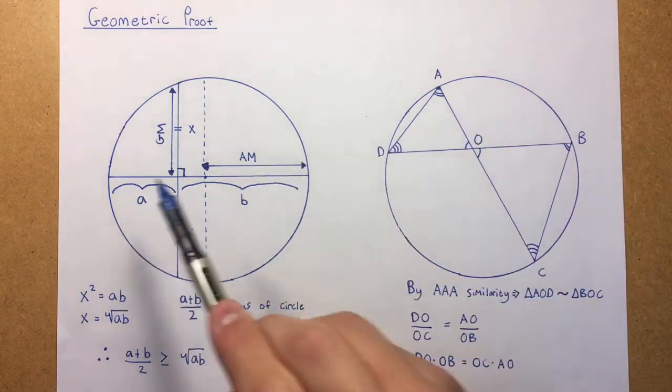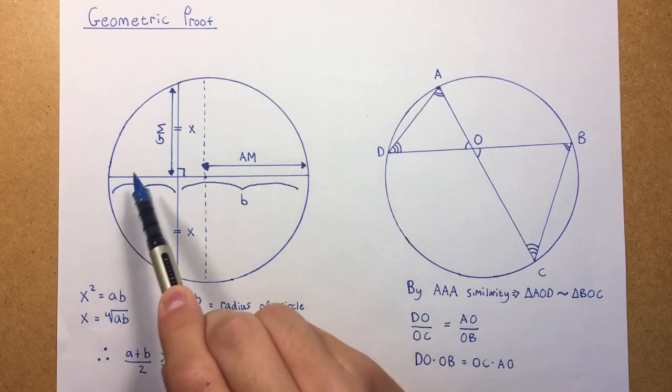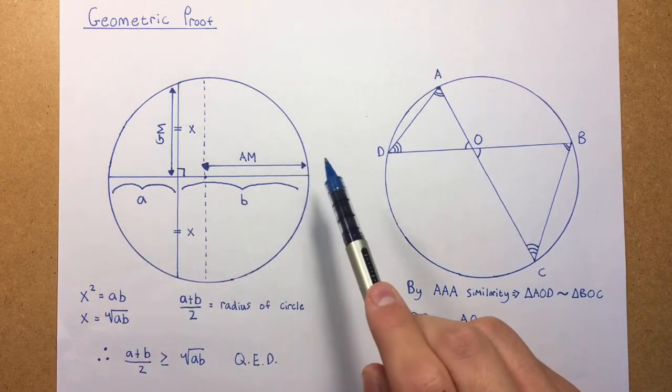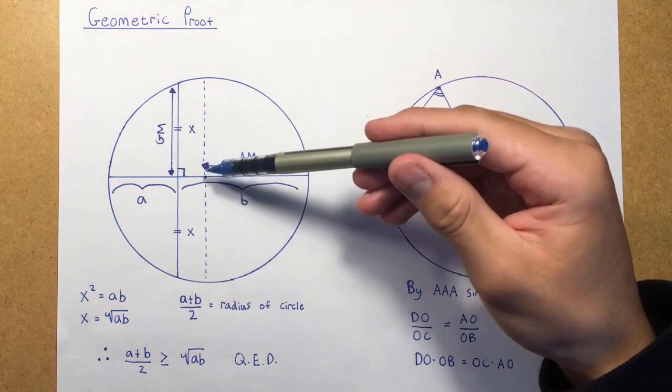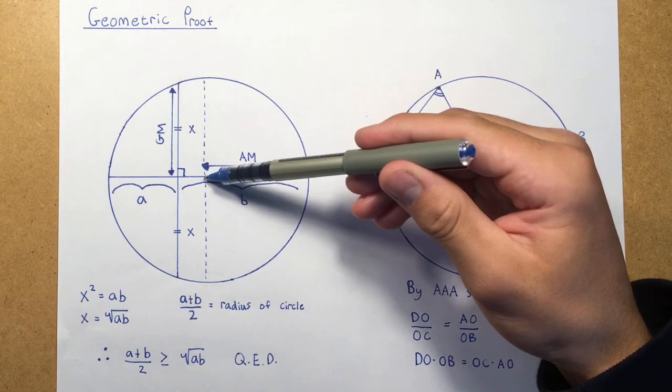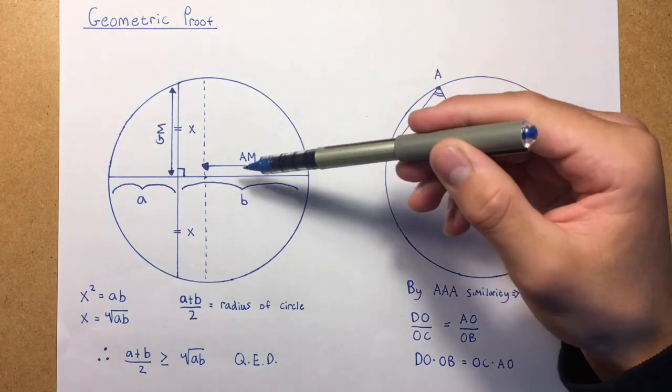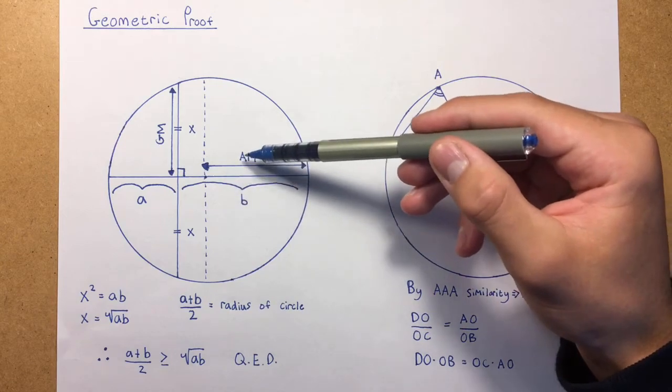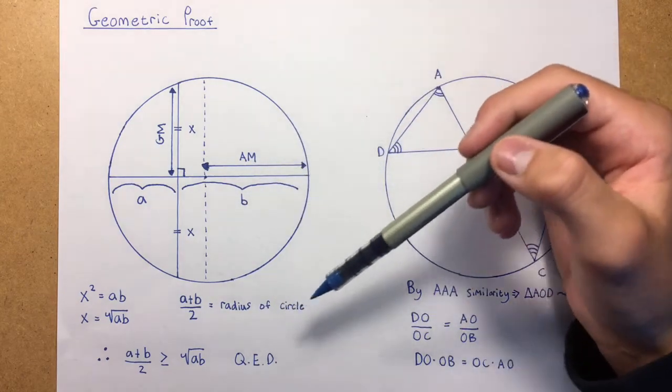So no matter what numbers you pick, it could be A and B like this, or a small value for A and a big value for B, but no matter what it is, the mean of these, the arithmetic mean, is just the distance from the centre to the circumference on the circle. Basically, it's just the radius. The distance is the radius, and the arithmetic mean will stay constant.